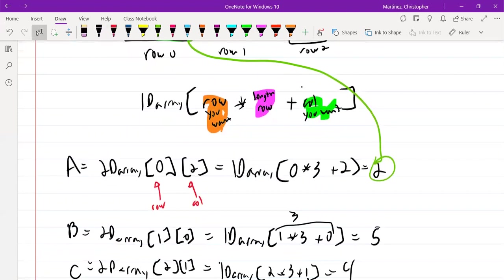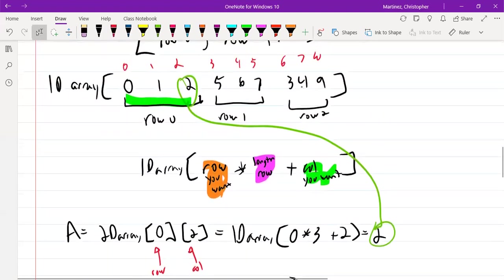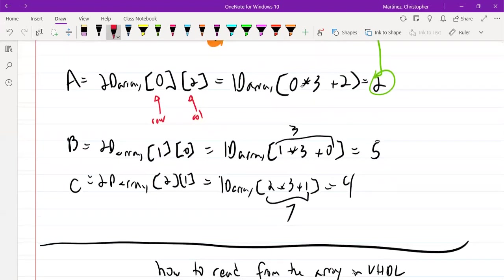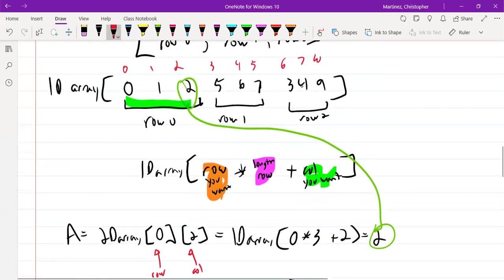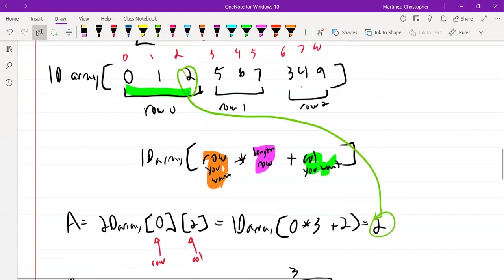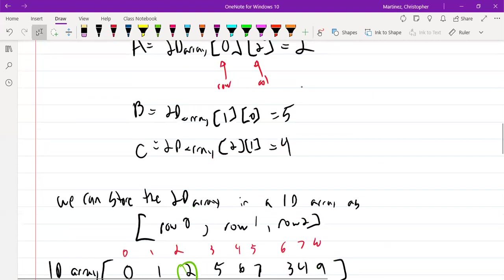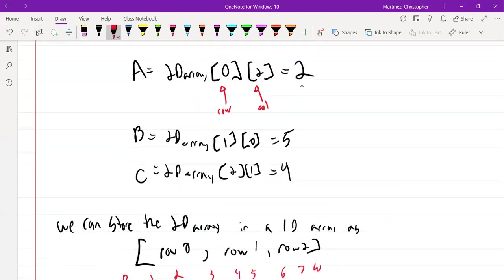Let's do B. I want row 1, column 0. So 1 times 3 plus 0 is 3. We look at the index for 3, the index is in red. That's element 5. I want it to be 5. C is 2, 1. So 2 times 3 is 6, plus 1 is 7. We go up. Index 7 is the value 4. So we read 2, 5, 4. If we go back up to the array, we also want 2, 5, 4. So you can see that this works.